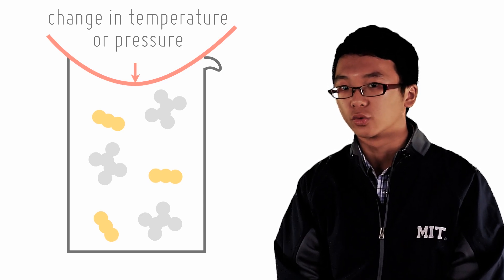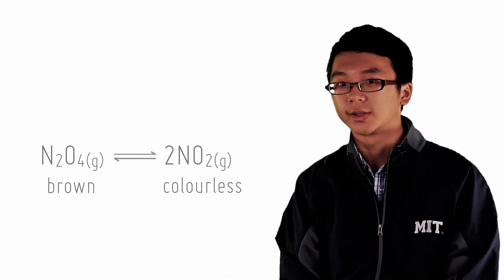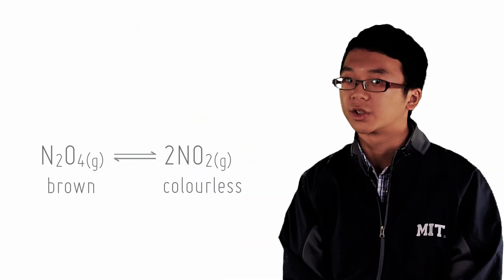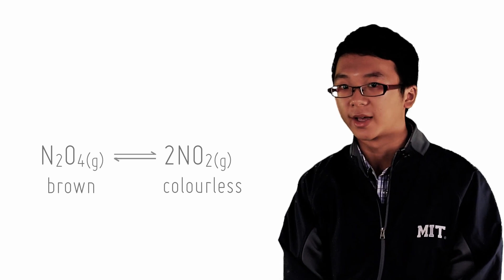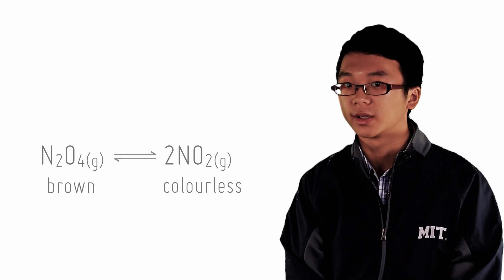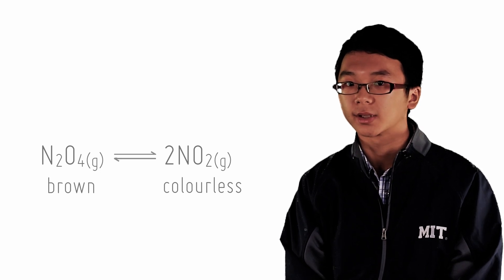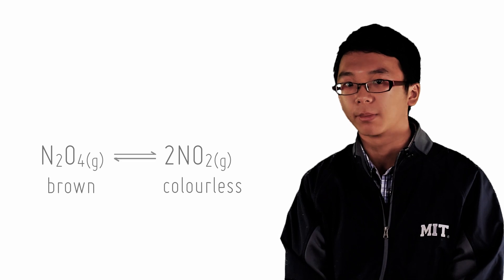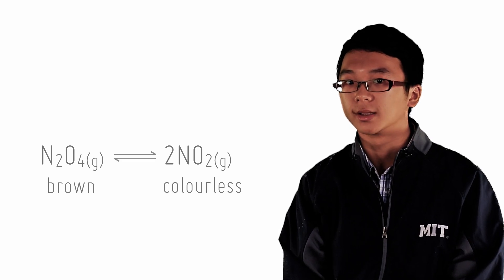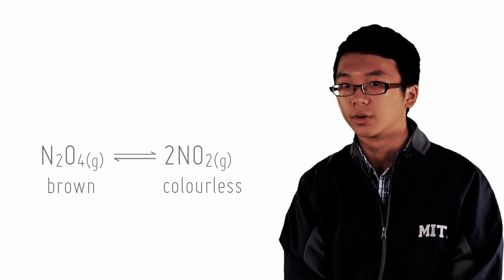How does this help our situation? Let's look at the reaction again. Notice on the left side there is one mole of gaseous reactant, but on the right side there are two moles of gaseous product. Two moles of gas occupy and collide twice as often as one mole of gas. If we want to decrease the pressure of the system, then we must shift the equilibrium position in a direction that reduces the number of moles of gas. In this case, we ought to shift the equilibrium position to the left, because there are simply fewer moles of gas.